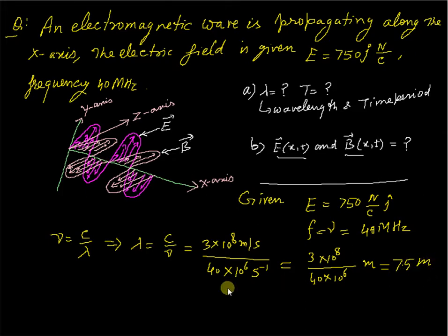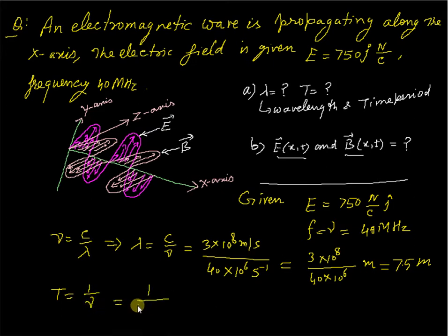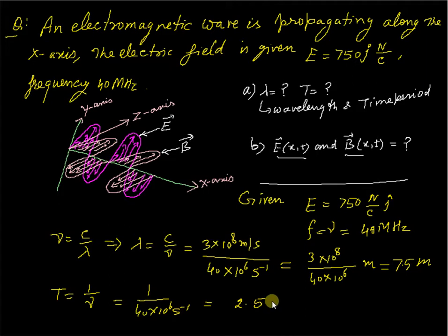The wavelength is 7.5 meters. For the time period T, T equals 1 divided by nu, so T = 1 / (40×10^6), which equals 2.5×10^-8 seconds.